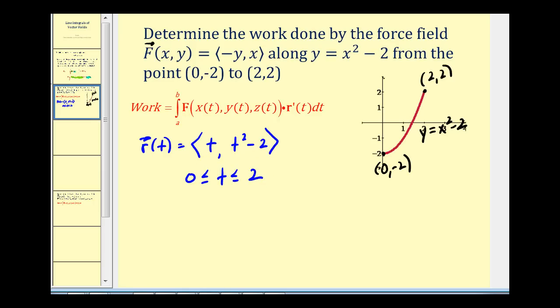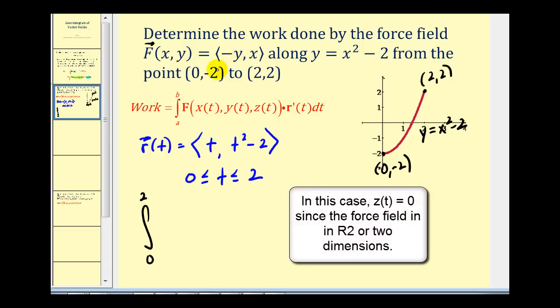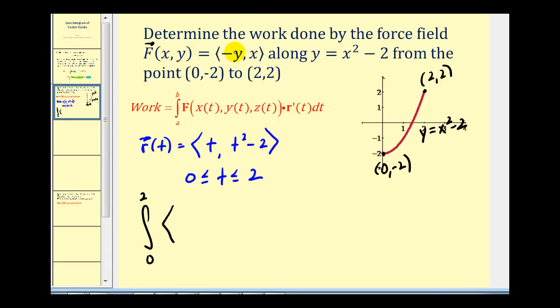Let's set up our definite integral in terms of T. The limits of integration will be from zero to two. We'll rewrite our vector field as a function of T using x of T and y of T. So the x component will be the opposite of y of T, which is two minus T squared. For the y component, x of T is equal to T.